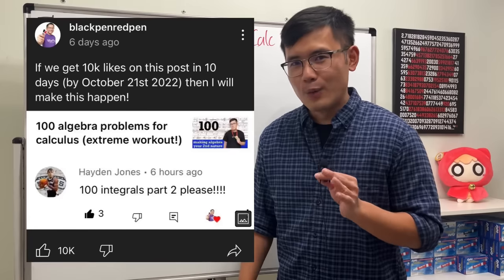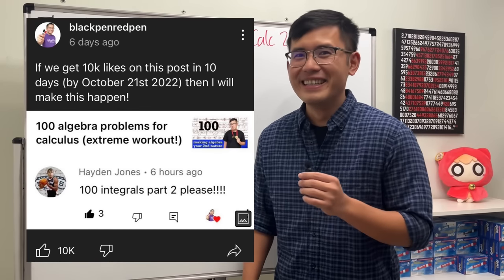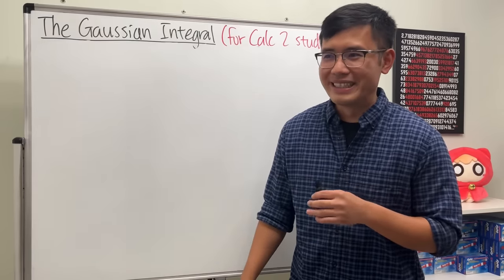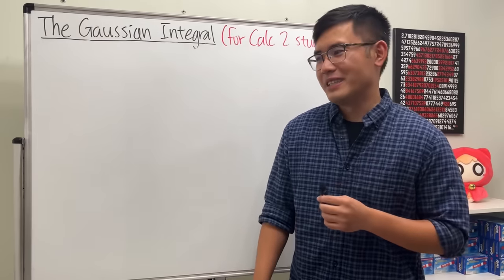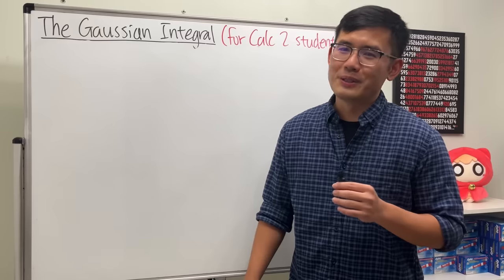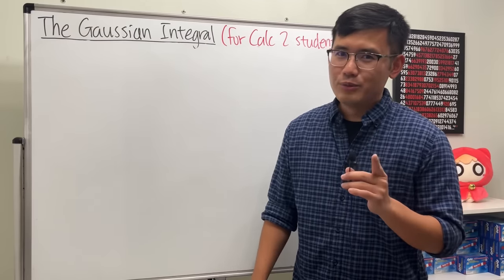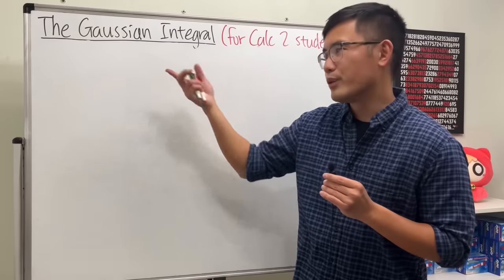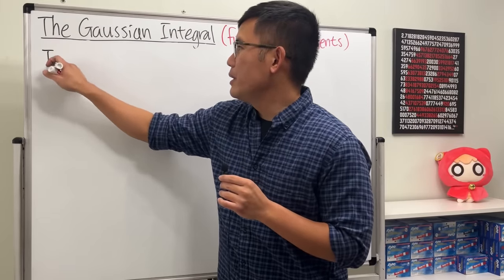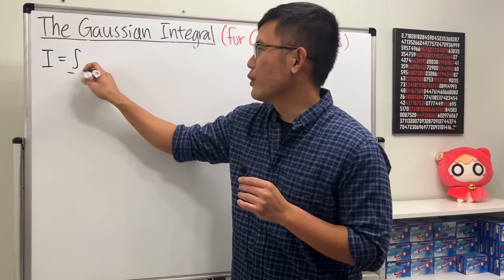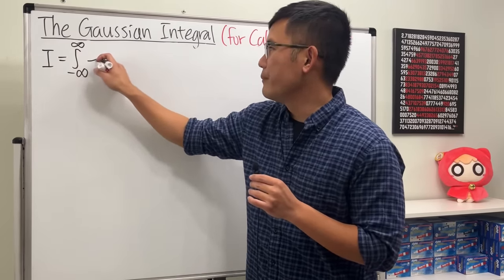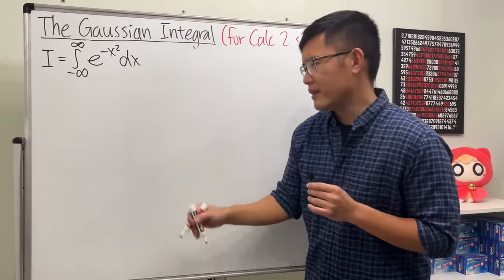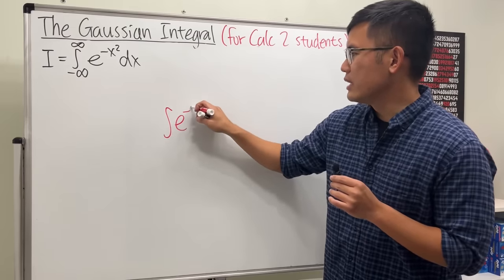Due to popular demand I will be doing another 100 integrals, and this time I will be doing some calculus 3 stuff as well. I still remember the most famous integral you'll see in calculus 3 is the Gaussian integral, which I'll call I. This is the integral going from negative infinity to positive infinity of e to the negative x squared dx. You might be wondering how in the world do we integrate e to the negative x squared.